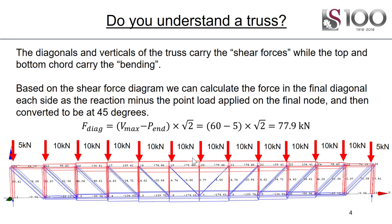Based on the shear force diagram, we can calculate the force in the final diagonal. There is a 60 kilonewton reaction on the end. If we break up that UDL into a bunch of point loads, the end point load is about 5, and then we convert this to being at a diagonal, so multiply it by √2, we end up with roughly 78 kilonewtons.